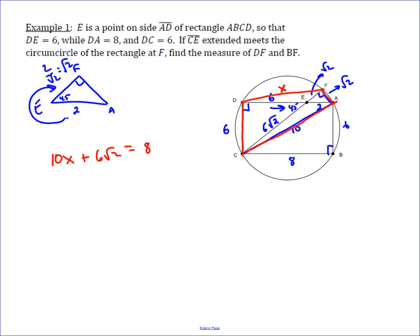And CF, well, if CE is 6 root 2, then, and EF is root 2, then CF is 7 root 2. And so now we have an equation we can solve, and it turns out to solve very nicely, because you get 10X equals, well, 6 root 2 minus 56 root 2 minus 6 root 2. It's going to give you 50 root 2. Divide both sides by 10, and you get 5 root 2.